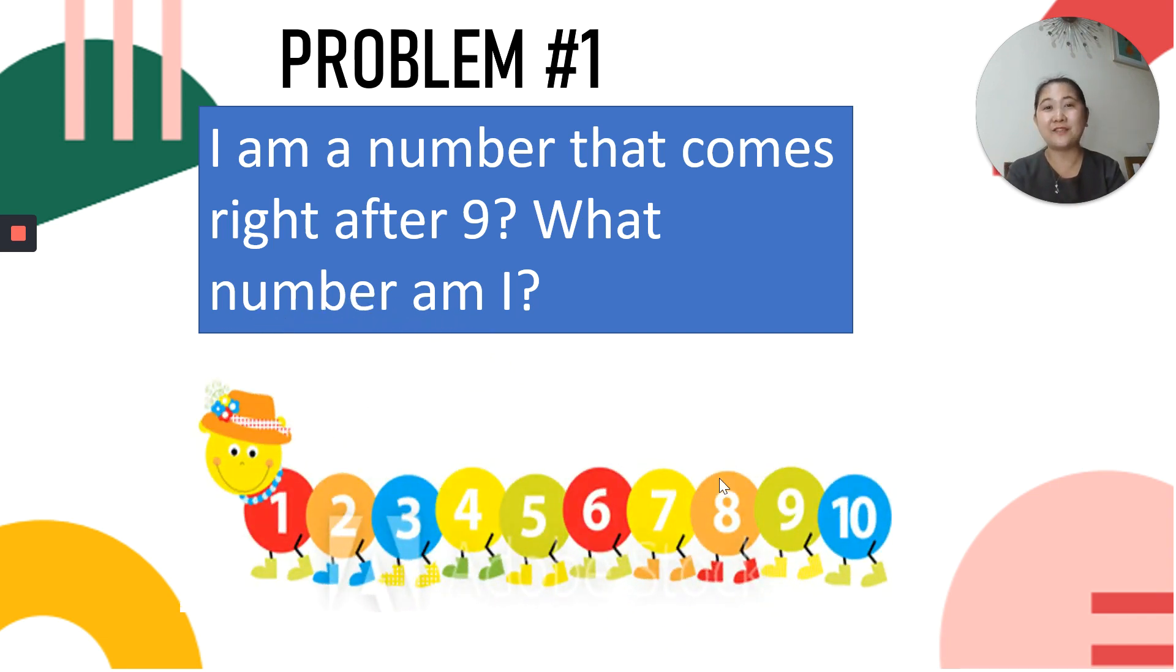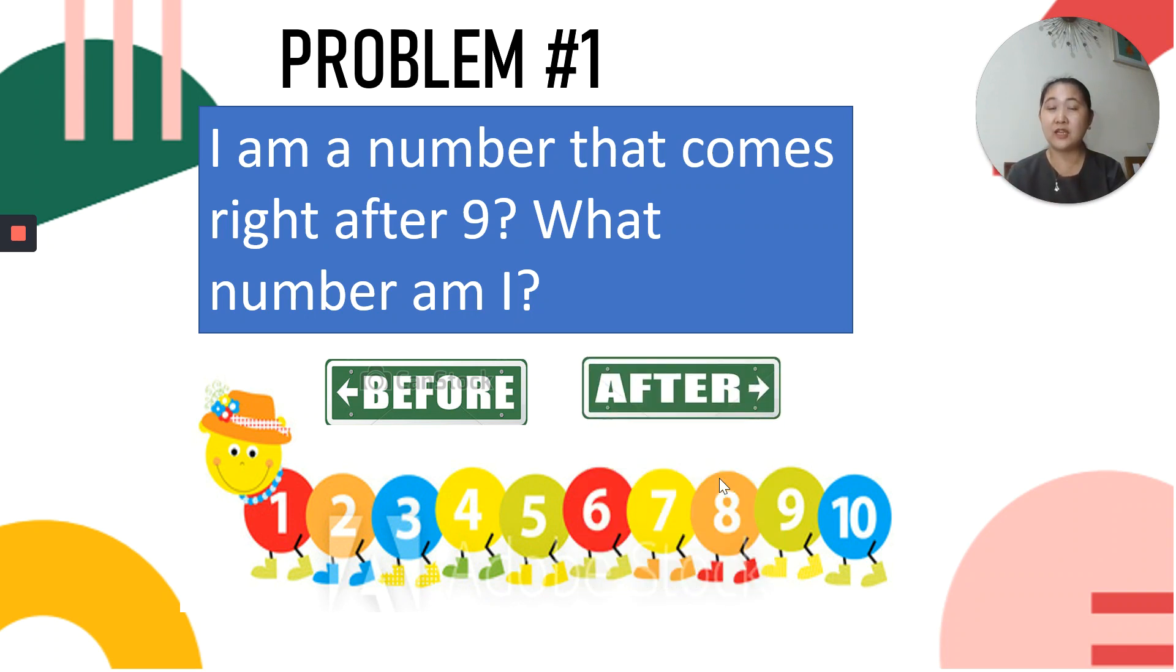Now, look at the caterpillar. There are numbers written on it, right? Look. We say before, the numbers are going to the left. And after, the numbers are going to the right. So, from left to right. After, before, after. So, look at number 9. What number comes right after 9? Yes. That's correct. It's 10. Very good.